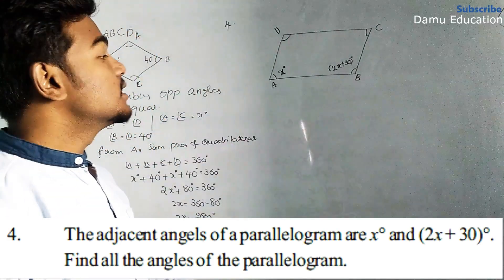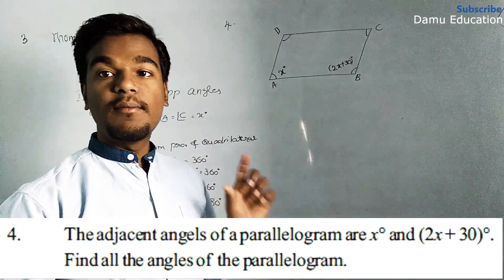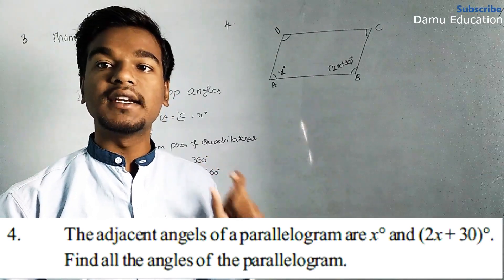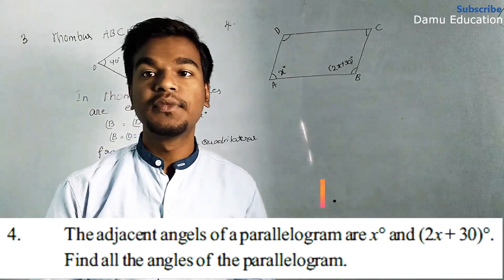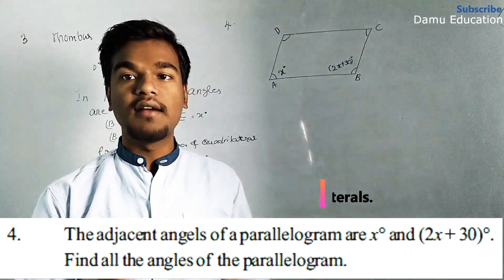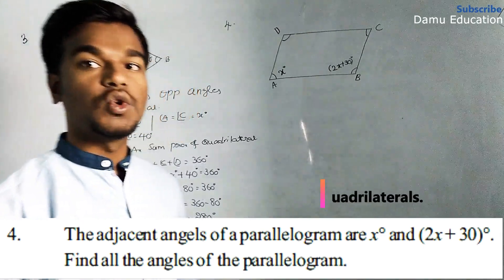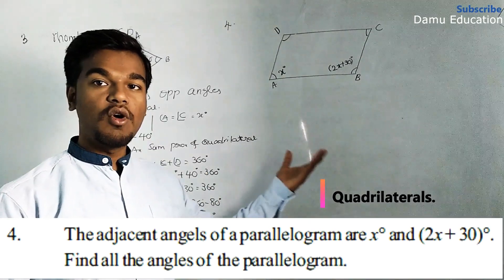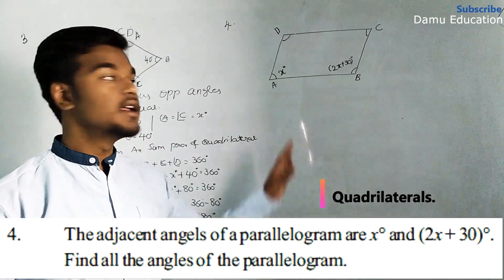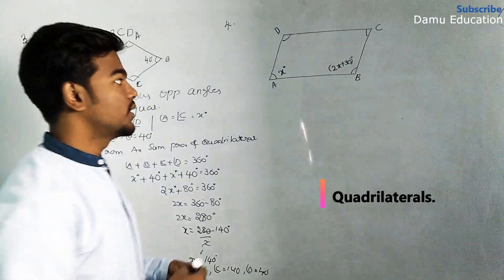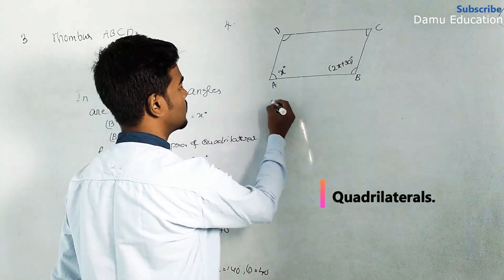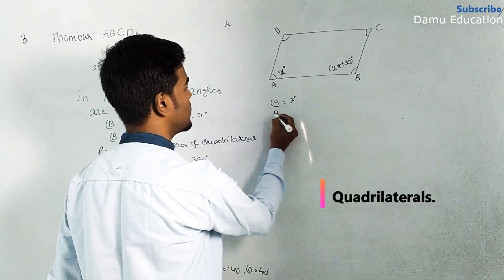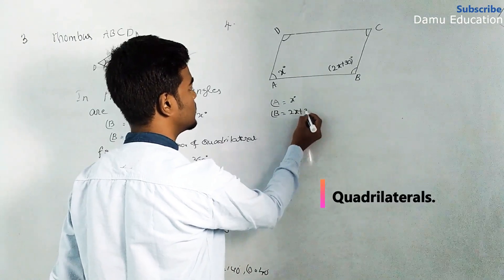Now for the next question, we are given a parallelogram. In that parallelogram, two adjacent angles are given and we have to find the remaining angles. Here angle A equals x degrees and angle B equals 2x plus 30 degrees.